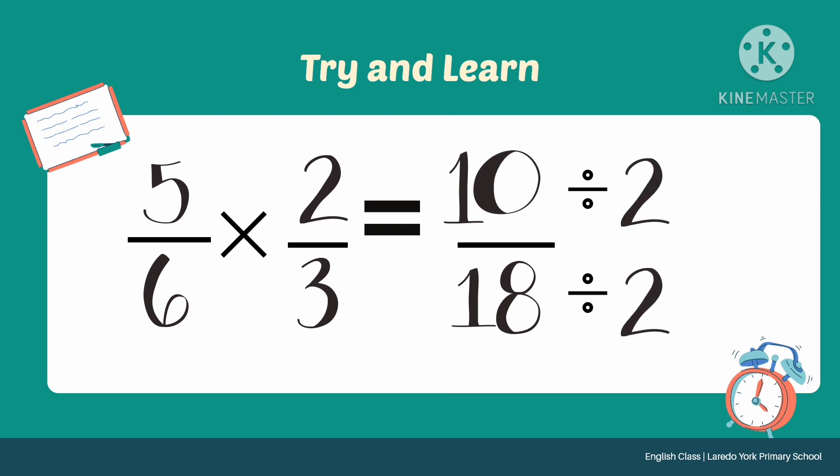We will divide the numerator and the denominator by 2. 10 divided by 2 is 5 and 18 divided by 2 is 9. 5 over 9 is already relatively prime. Masasabi natin relatively prime na ang fraction kung ang kanyang GCF is 1.